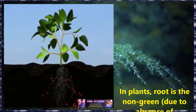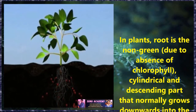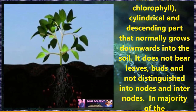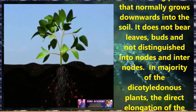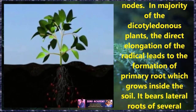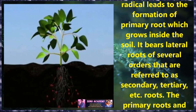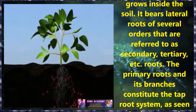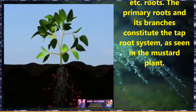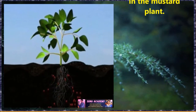Now, let us discuss about the root. In plants, the root is the non-green, cylindrical and descending part that normally grows downwards into the soil. It does not bear leaves or buds and is not distinguished into nodes and internodes. In the majority of dicotyledonous plants, the direct elongation of the radical leads to the formation of the primary root which grows inside the soil. It bears lateral roots of several orders referred to as secondary, tertiary, etc. The primary root and its branches constitute the tap root system, as seen in the mustard plant.